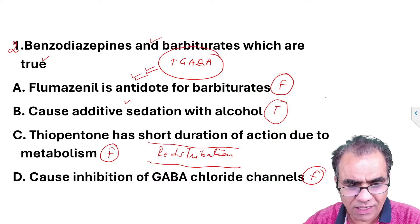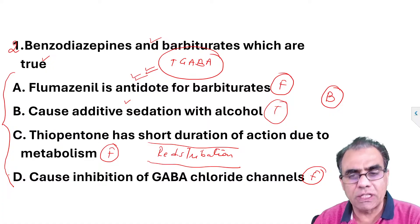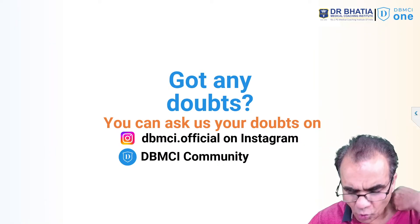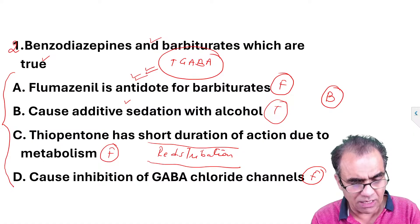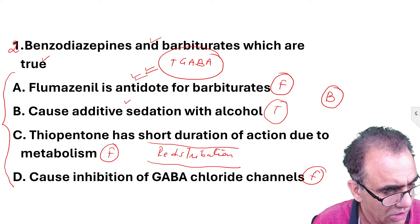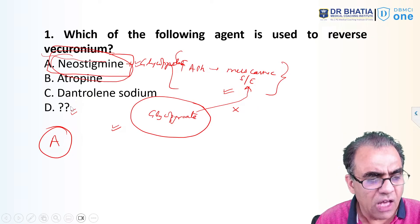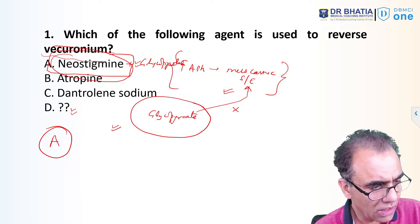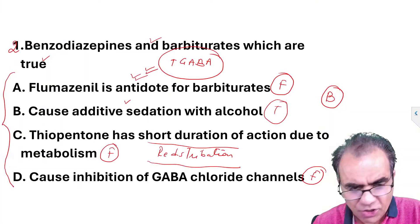So the correct statement is B. I'm not sure if the question was formatted this way or as multiple choices, but the only correct statement is B — the other three are wrong. Regarding the first question, one of the other options was baclofen. Baclofen is also a muscle relaxant but is not used to reverse non-depolarizing muscle relaxants. So it was a multiple choice question, and the only correct answer is neostigmine.